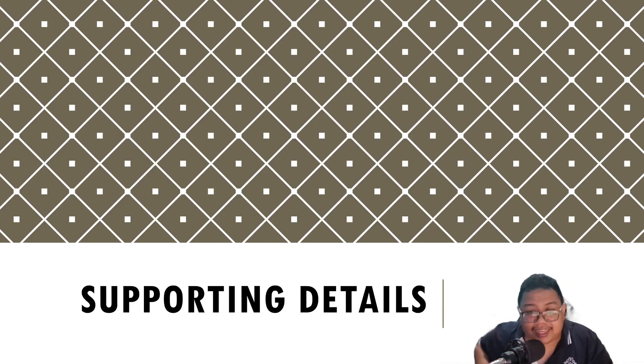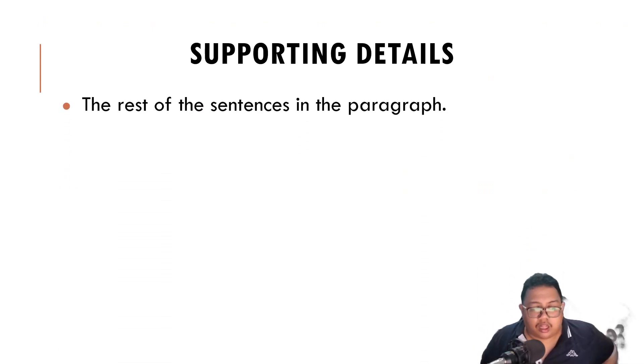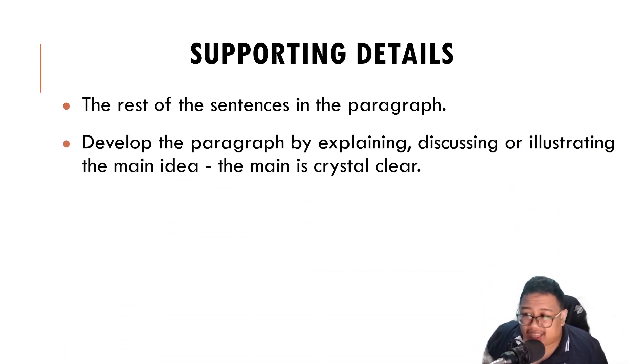Then we move into supporting details. This is very easy. So if you have problems, repeat and repeat and repeat. What are supporting details? So supporting details are usually the rest of the sentences in the paragraph. So you have the topic sentence, that is the first one. Then the rest of the sentence that comes after that are the supporting details.